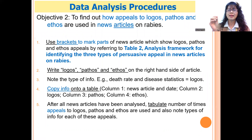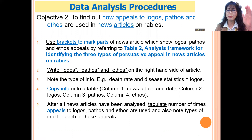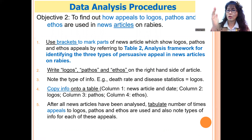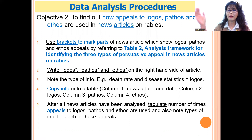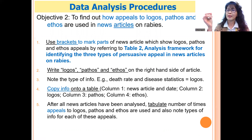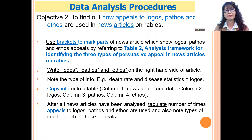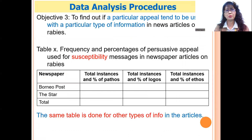I also compile the results into a table: column one for the article number, then separate columns for logos, pathos, and ethos. I put down a count depending on how many times each appeal appears. This helps me tabulate the final results for objective two.